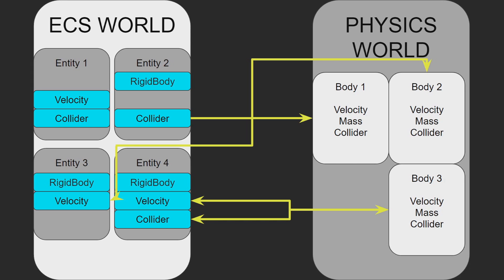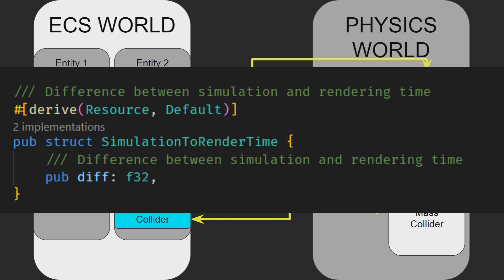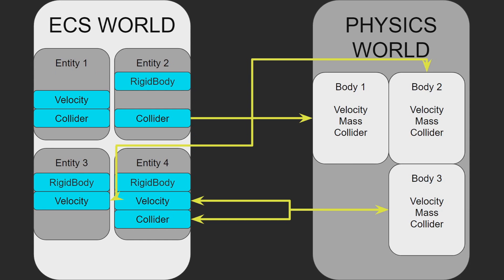Bevy Rapier also provides full resources for communicating with the physics world. They are more about holding settings than they are about directly interfacing with the physics themselves. First is the simulation to render time. This indicates the difference between the physics world steps and the render world steps. This means that some things like the physics world can run at a faster speed than is rendered each frame, or at least I think that's what it does. I haven't particularly looked into what it does if you change this configuration.